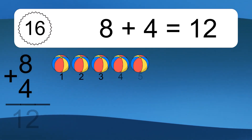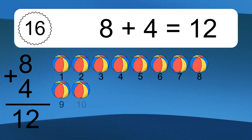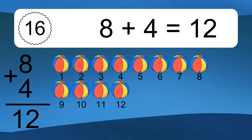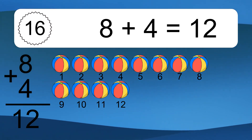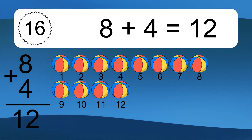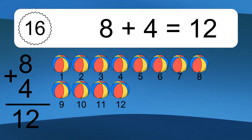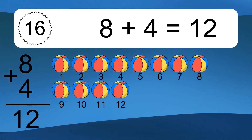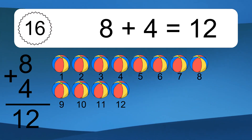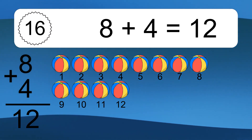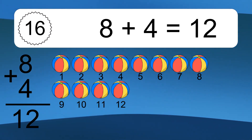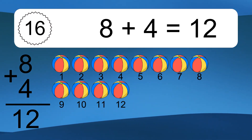8 plus 4 equals 12. Let's count it. 1, 2, 3, 4, 5, 6, 7, 8, 9, 10, 11, 12.